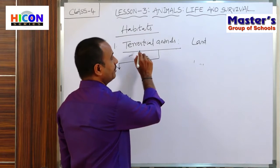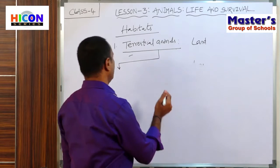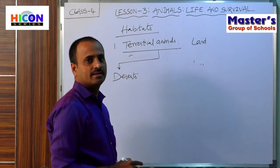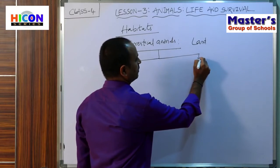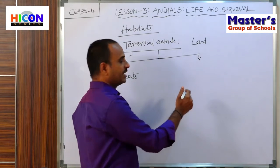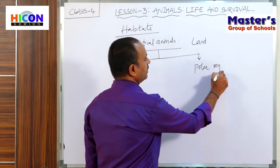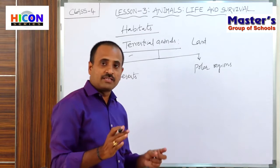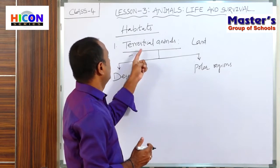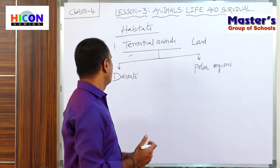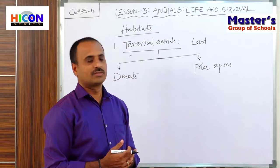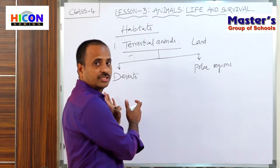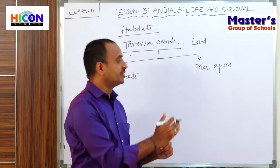Among terrestrial — meaning land — there are two types of lands. The first one is deserts, and the second one is polar regions, that means ice cold regions. So terrestrial animals are classified into two types based upon the land. The animals which live in deserts and the animals which live in polar regions. First we will discuss the animals which live in deserts, and next the animals which live in polar regions.